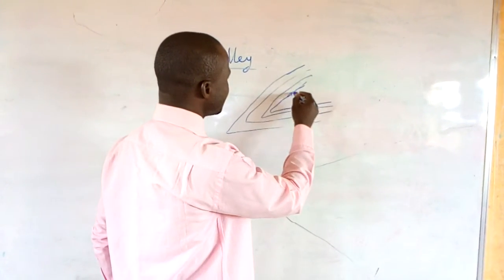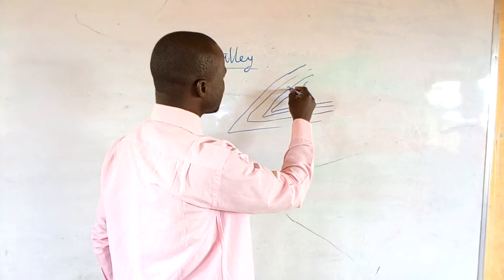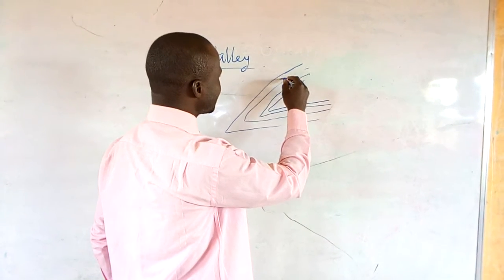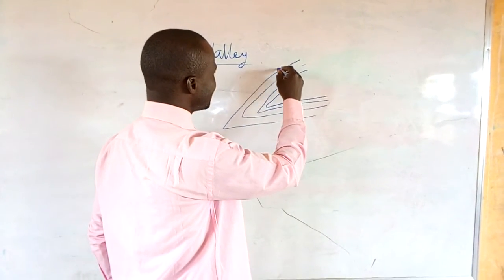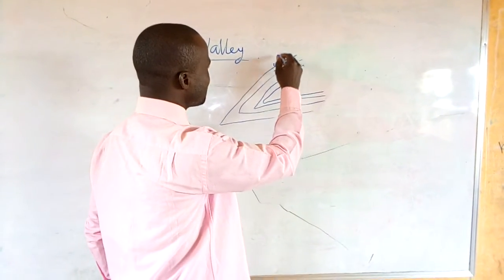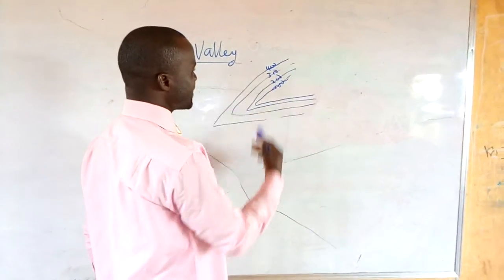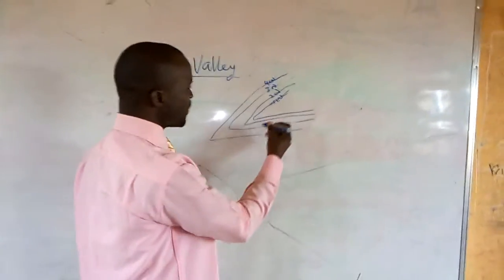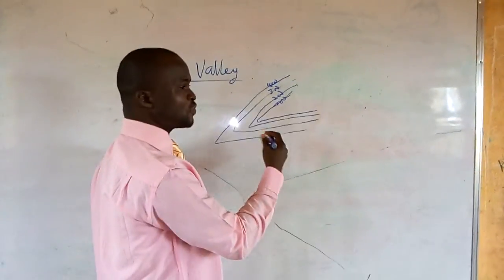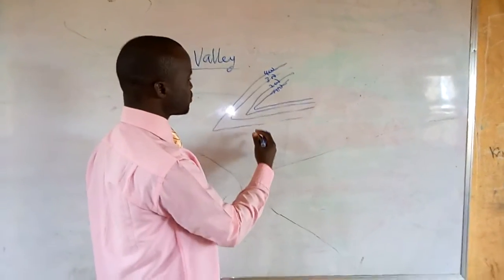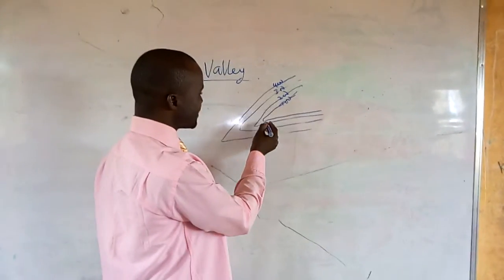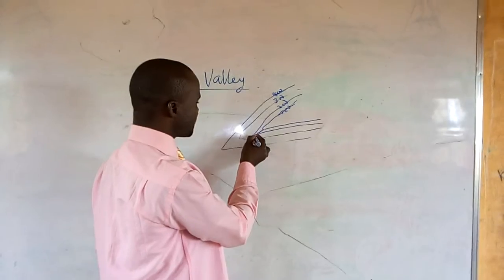Remember, we said this is 100, 200, 300, 400. In our previous class, we said the contour representation here is 100. So when you are asked to show a valley on the topographic map, this is the valley.